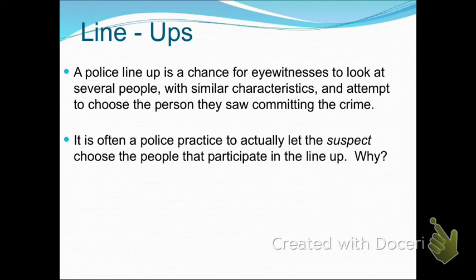We also saw a little bit about police lineups — it's a chance for eyewitnesses to look at several people and attempt to choose the person they saw committing the crime. Problems arise when the actual person isn't present and the mind is trying to make someone match. Sometimes in police practice, the suspect is allowed to choose the people that participate in the lineup, which eliminates the possibility of police bias and ensures objectivity.